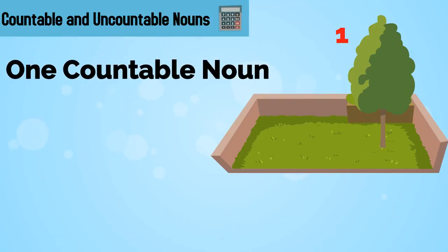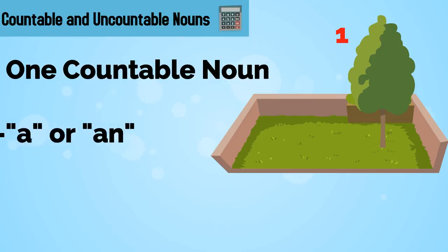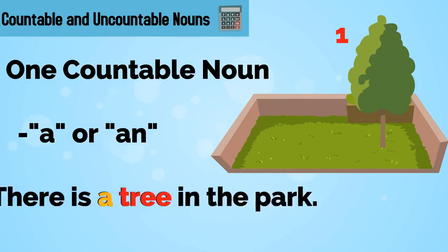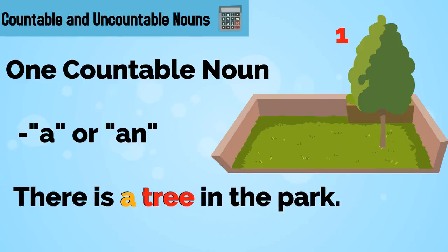If there is only one countable noun, we use the indefinite articles a or an. For example, there is a tree in the park.